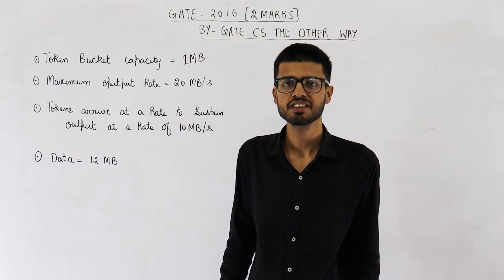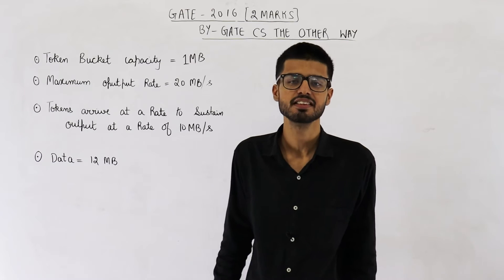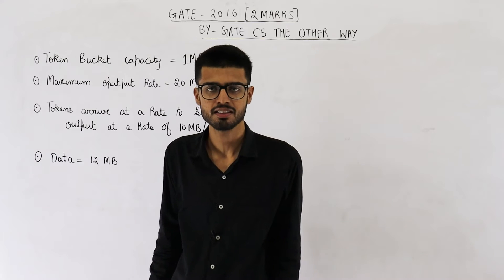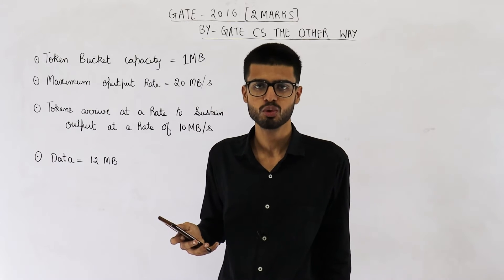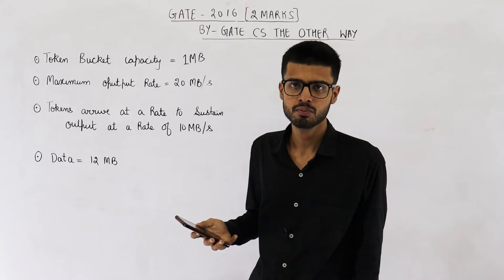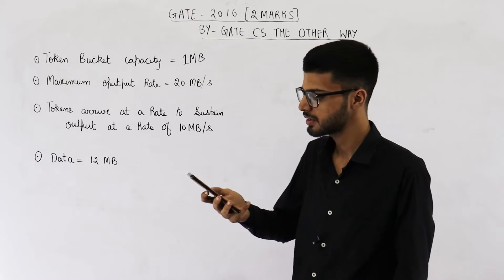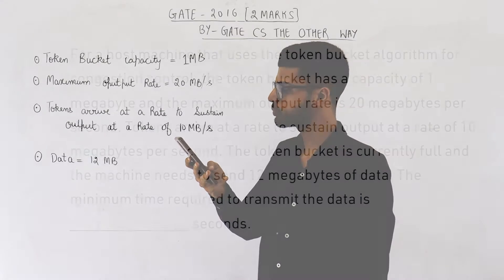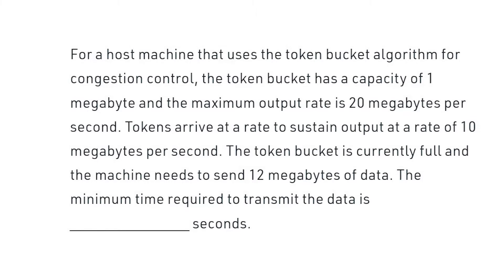Hello students, welcome back. The question is from the GATE 2016 exam and is for two marks. This is from the topic of token bucket. Let me read the statement then I'll explain it. For a host machine that uses the token bucket algorithm for congestion control, the token bucket has a capacity of 1 MB and the maximum output rate is 20 MB per second. Tokens arrive at a rate to sustain output at a rate of 10 MB per second.